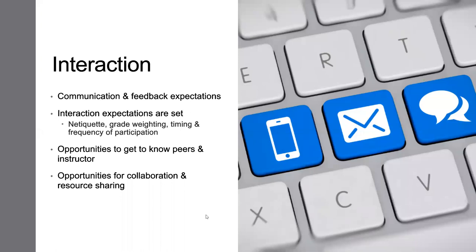The next standard is interaction. This portion of the rubric talks about how to create a sense of community within your course — how to encourage students to interact with one another and with yourself as a way to demonstrate learning and deepen learning amongst themselves. It's an opportunity to develop those relationships with students that you do in the classroom. You really can develop a deep relationship with your students online; it looks a little different and takes different tools, but it's absolutely possible. The OSCAR rubric also encourages providing opportunities for collaboration and resource sharing — mirroring what students will do in the real work environment.